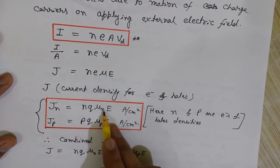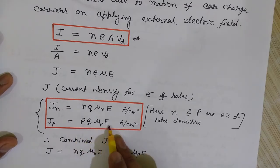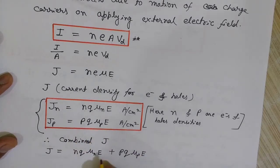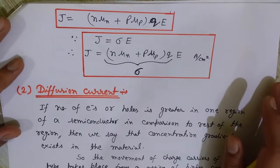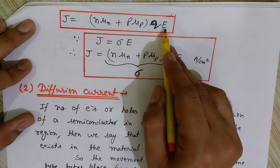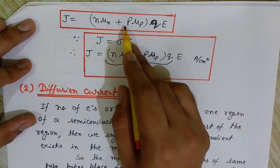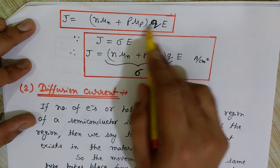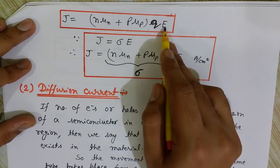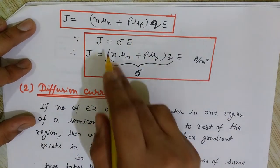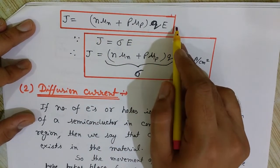The combined current density is: J = n·q·μn·E + p·q·μp·E. Taking q and E as common factors, we get J = q·E·(n·μn + p·μp). This is the combined drift current density equation for electrons and holes in the semiconductor.